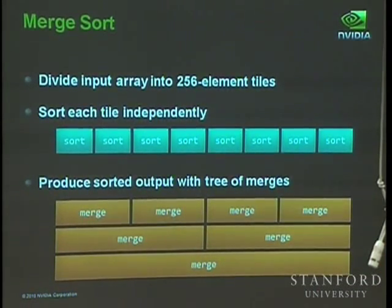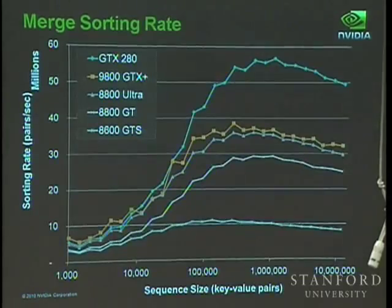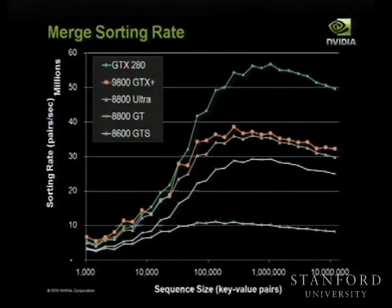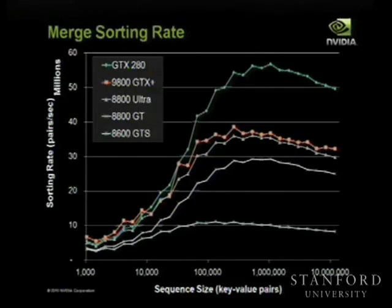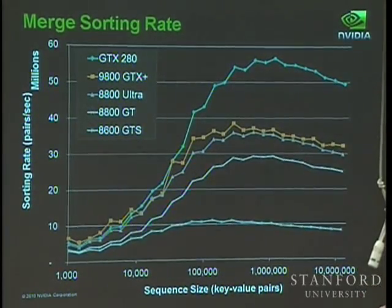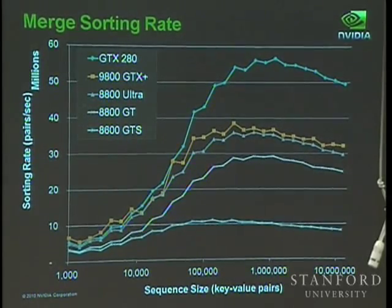Here is the performance data showing the sorting rate for this parallel merge sort, measured on different GPUs. Again, you can see good scaling from very small GPUs to big GPUs, and the scaling is actually pretty well predicted by the ratio of peak throughput of all these machines.